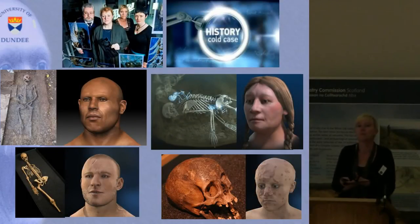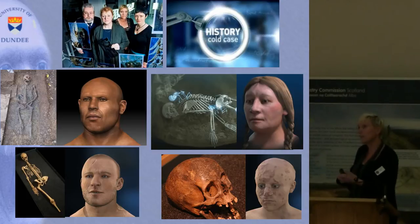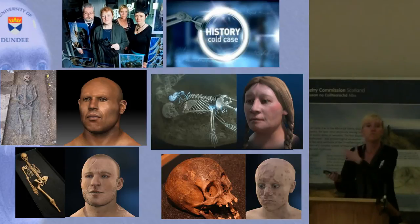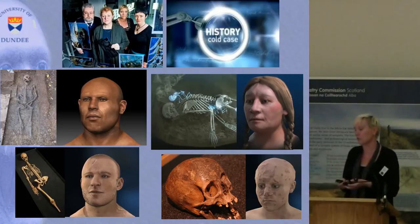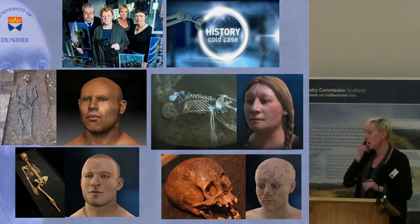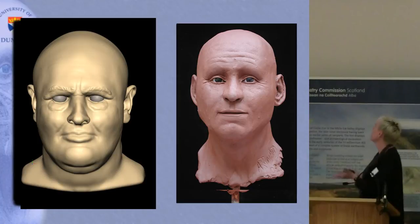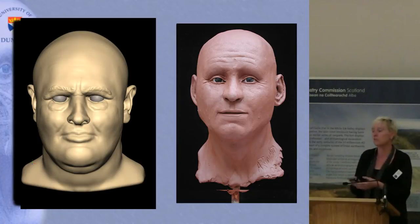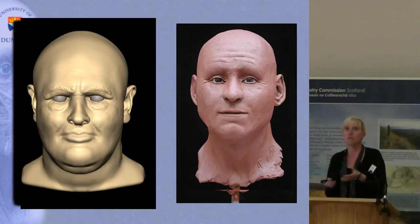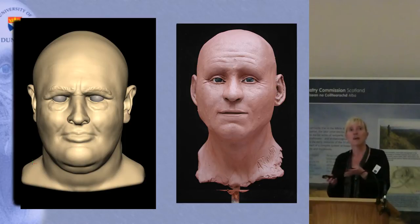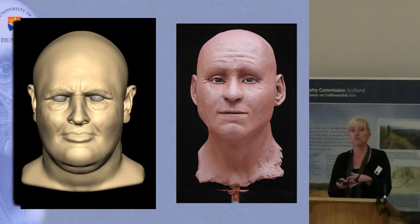We've also used this within the world of archaeology for creating the faces of people from the past. If any of you have watched the History Cold Case program from Dundee, you will have seen some of the more recent examples with our digital technology and CGI. This is the process — on the left-hand side is the digital three-dimensional system, and on the right-hand side the traditional clay. It's exactly the same process regardless of whether it's digital or not, in that the anatomical structures, primarily the muscles, are built directly onto the skull. Tissue depth pegs give us some indication of the average amount of tissue over and above the muscle structure, enabling us to build a face from the skull to the surface.